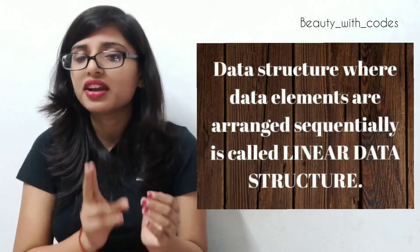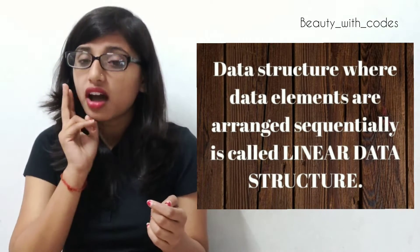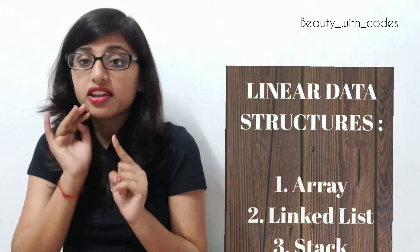If we store data elements in sequential manner, then the data structure we are using is called linear data structure. Examples include array, linked list, stack, and queue.